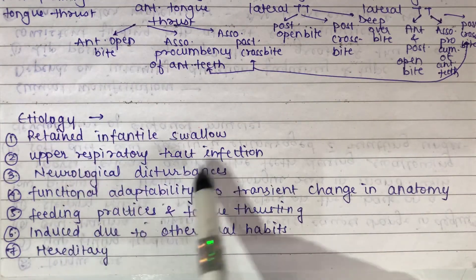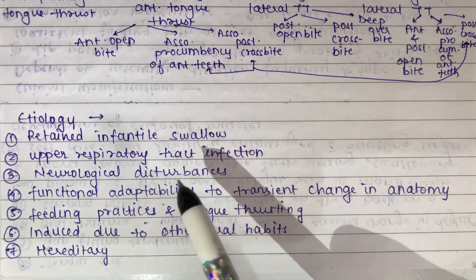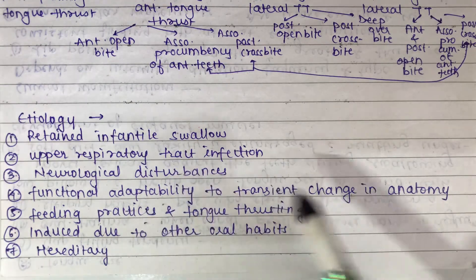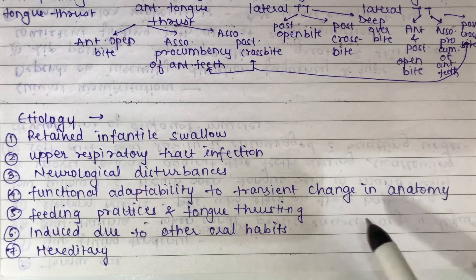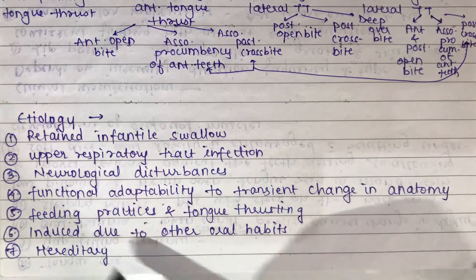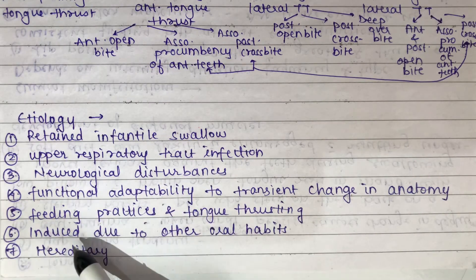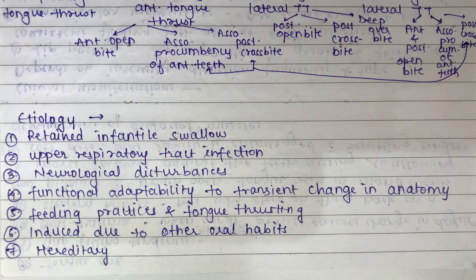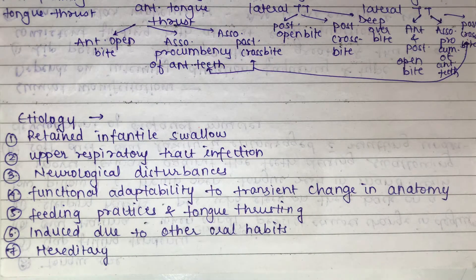Other etiological factors include upper respiratory tract infection, neurological disturbances, and functional adaptability to transient changes in anatomy — for example when the patient transitions from primary to permanent teeth. Feeding patterns are another factor. Tongue thrusting can also be induced by other oral habits such as thumb sucking, which depresses the tongue and keeps the teeth apart, potentially inducing malfunctions of the tongue.